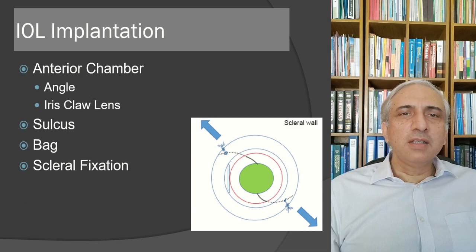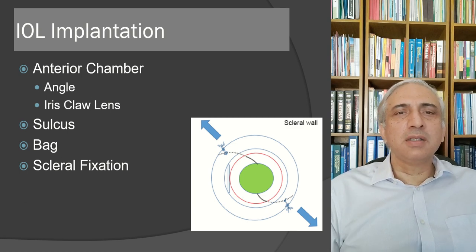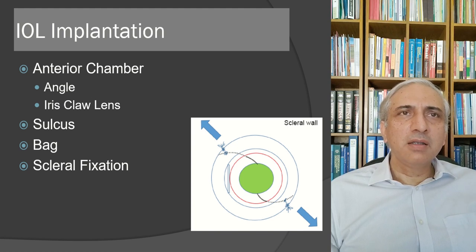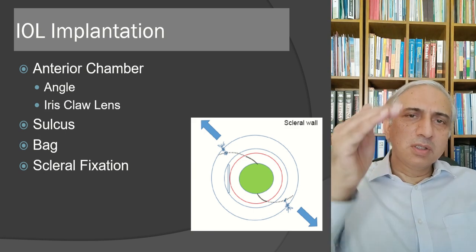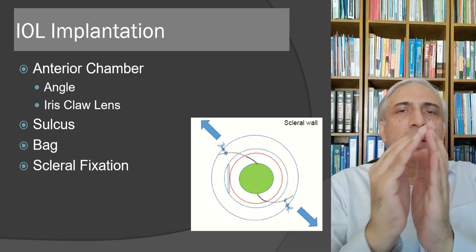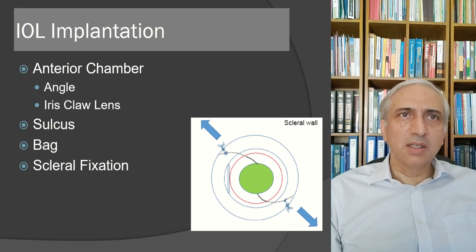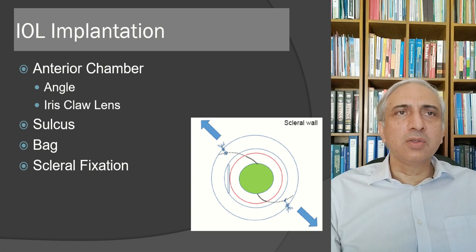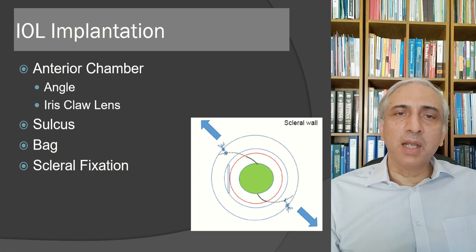IOLs can be placed in different positions: in the anterior chamber (in the angle or as an iris-claw lens), behind the iris in the sulcus, or in the capsular bag. Scleral fixation — suturing the IOL into place — is required when there is no capsular bag, as in planned or traumatic intracapsular cataract extraction.